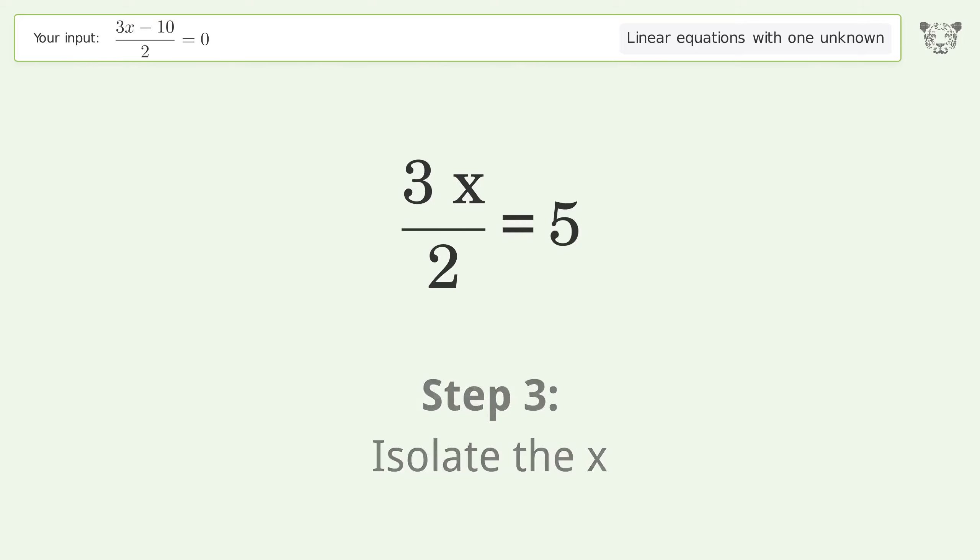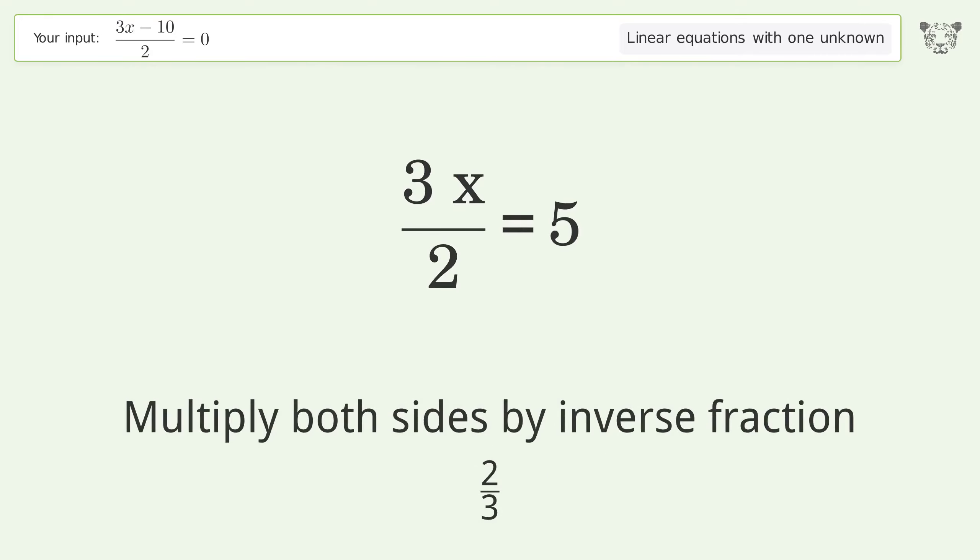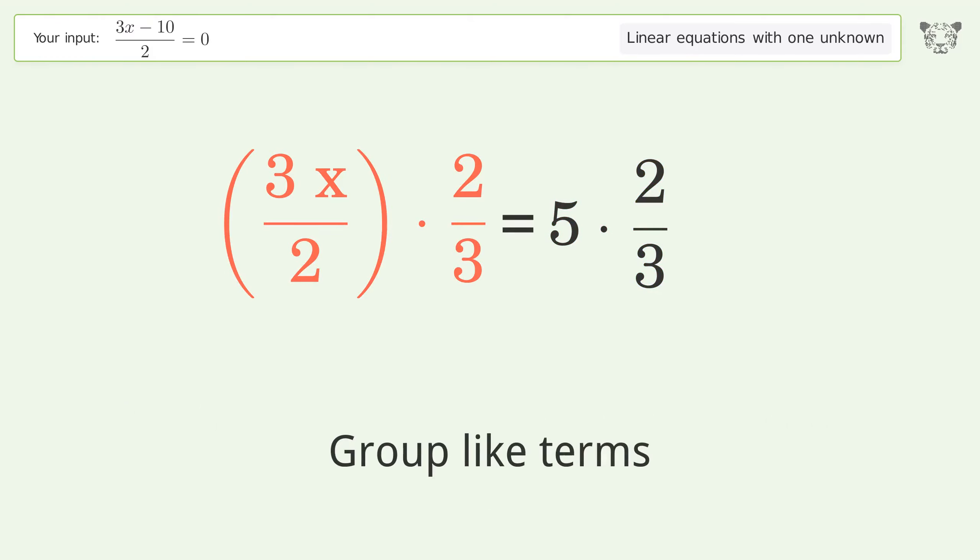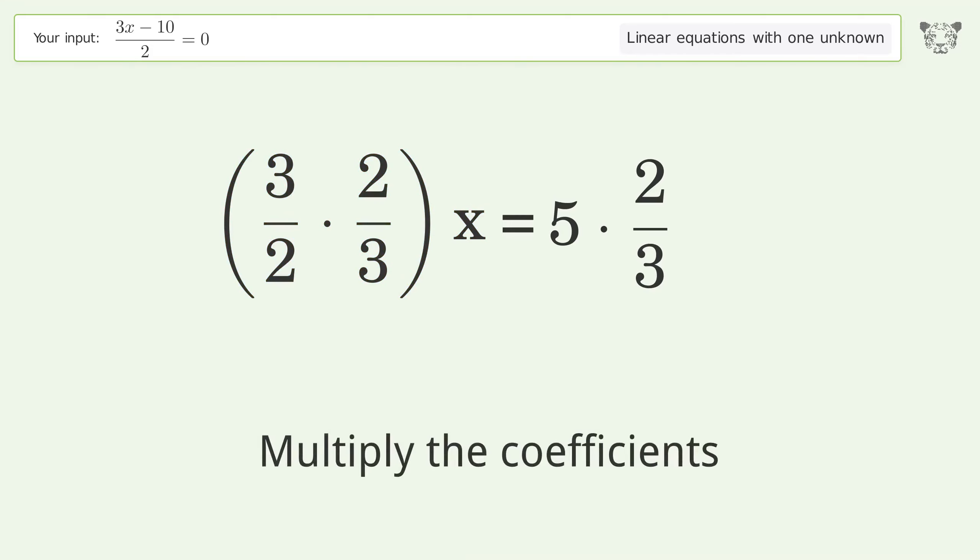Isolate the x. Multiply both sides by inverse fraction 2 over 3. Group like terms. Multiply the coefficients.